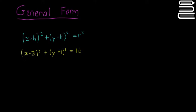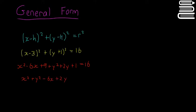I'm going to multiply all this out to see what we get. So x minus 3 squared gives us x squared minus 6x plus 9. And then y plus 1 squared gives us y squared plus 2y plus 1, equal to 16. Rearranging, we get x squared plus y squared minus 6x plus 2y, and 9 plus 1 is 10, minus 16 equals 0. So the final answer is x squared plus y squared minus 6x plus 2y minus 6 is equal to 0.